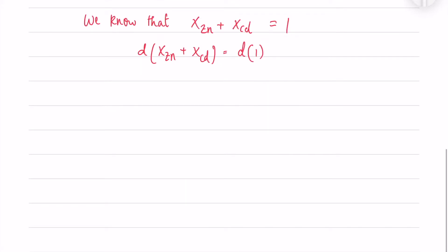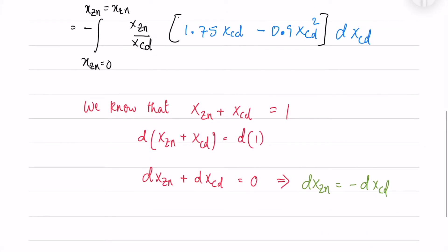When we take the differential, we are left with dxcd. We know that xzn plus xcd equals to 1. When we take the differential on both sides, the differential of 1 is 0. So, the d of zn equals to minus d of xcd.